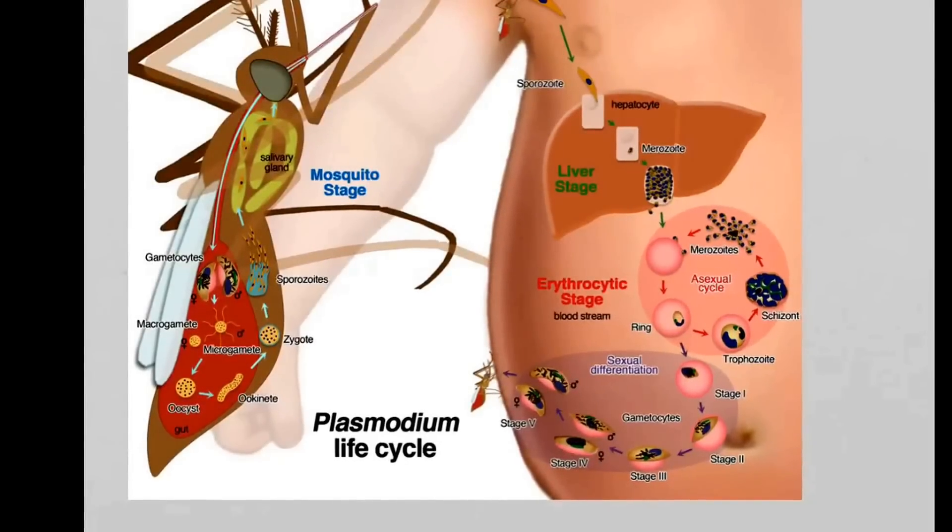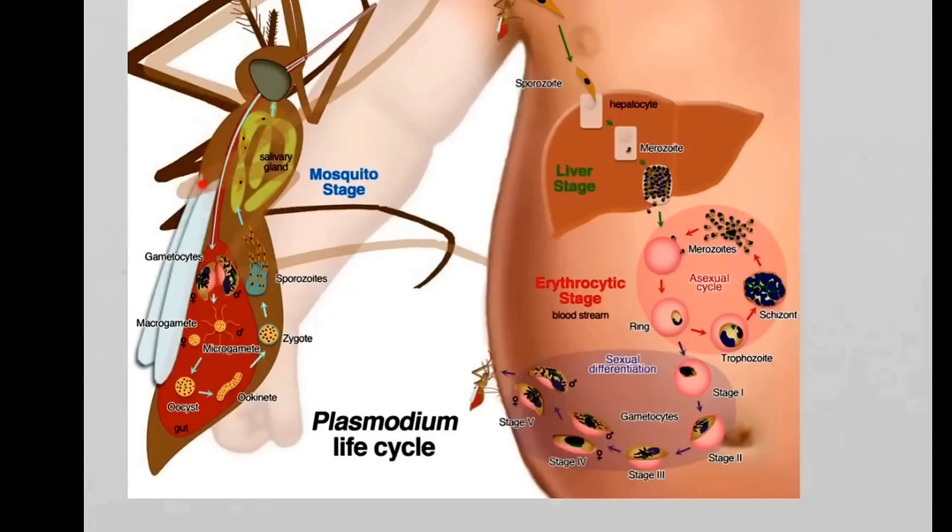First of all, what we need is a specific mosquito type, an Anopheles mosquito, and we need the female Anopheles. The male Anopheles don't bite. It is only the female mosquitoes that are horrible.